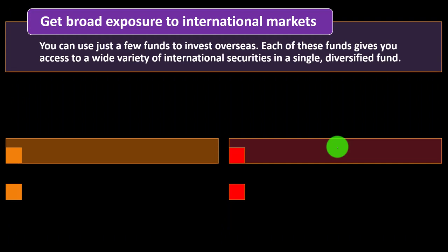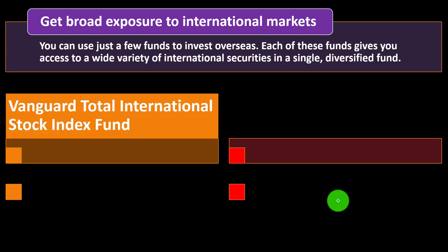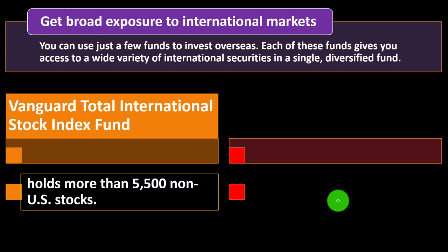To get broad exposure to international markets, you can use just a few funds to invest overseas. Each of these funds gives you access to a wide variety of international securities in a single diversified fund. One challenge with investing in other countries is that it can be difficult due to regulatory burdens and limited ease of access. The Vanguard Total International Stock Index Fund addresses this by giving broad exposure to a wide variety of international stocks.